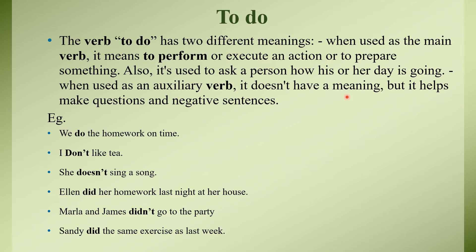When used as an auxiliary verb, 'do' helps to make question and negative sentences — yeh hume question banane ke liye aur negative sentence banane ke liye help karay ga. For example: 'I don't like tea' — here 'do' is the auxiliary verb and 'like' is the main verb. To make a negative sentence, you cannot use 'not' alone; you need an auxiliary verb. So we use do, does, or did for making negative sentences and questions.